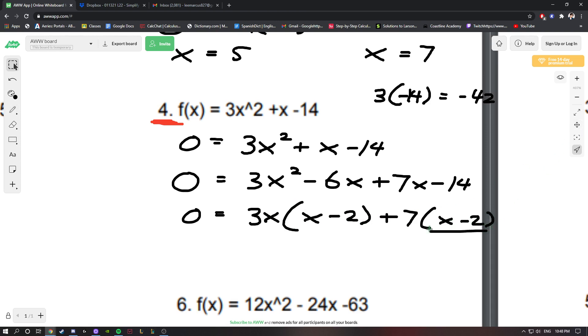These two common factors, x - 2, can stay. And the remaining two terms, 3x + 7, become their own factor: (3x + 7).